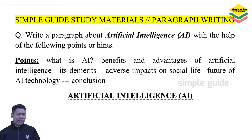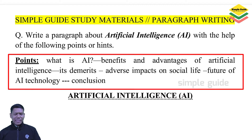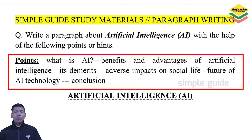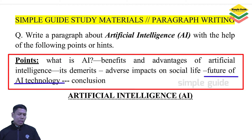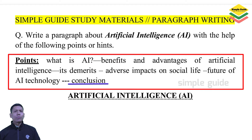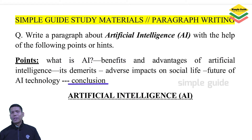We can write the writing skills. What is AI? AI is the key. Benefits and advantages of artificial intelligence. What are artificial intelligence? Next, its demerits. What are the benefits of artificial intelligence? Adverse impact on social life. What is the future of AI technology? And finally, the conclusion.